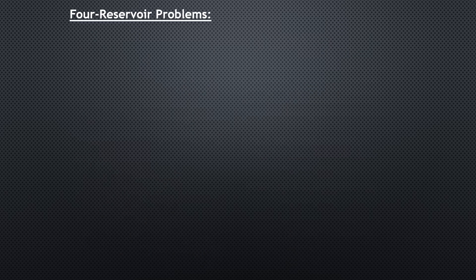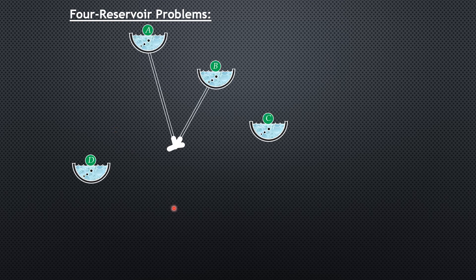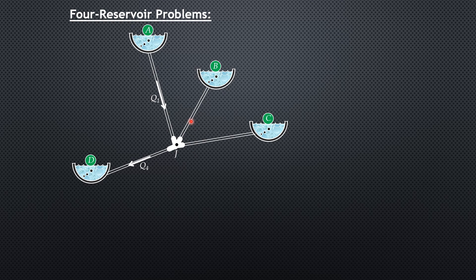Now let's have the principles on four-reservoir problems. We have four reservoirs A, B, C, and D. D is the lowest reservoir and A is the highest. Without a machine, A supplies — flow direction is towards the junction — and for reservoir D, the flow direction is towards D. That is certain. What is uncertain is the flow direction for reservoirs B and C, which we are going to investigate.